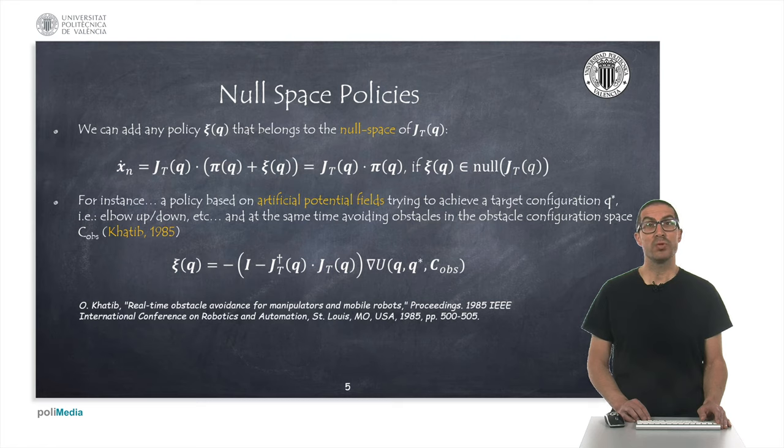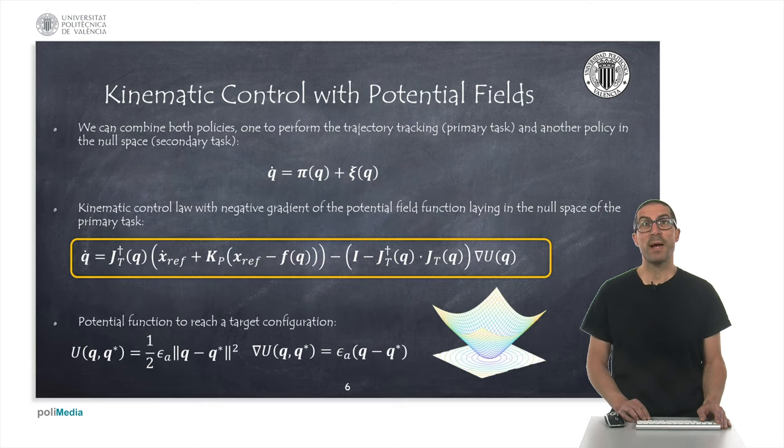In order not to interfere with the main task, this gradient will be multiplied with a projection matrix that will ensure that the vector T belongs to the null space of J, as indicated here. By combining both control policies, we can establish a kinematic control law that follows a given trajectory and at the same time tries to minimize a certain potential function, but as a secondary task.